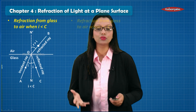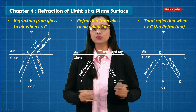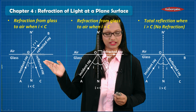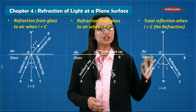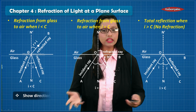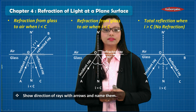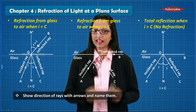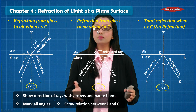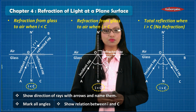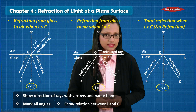Moving to the last part of the chapter — critical angle and total internal reflection. There are three cases: when the angle of incidence is less than the critical angle, equal to the critical angle, and greater than the critical angle. In all diagrams, label all the rays, show their direction, mark all the angles, and very importantly, show the relationship between i and c below the diagram.